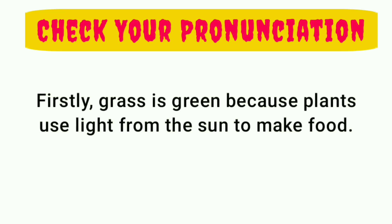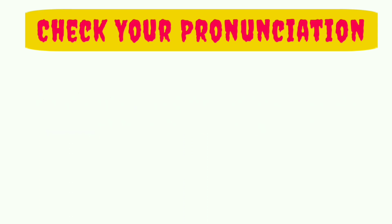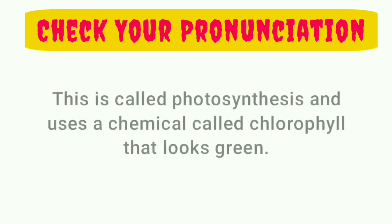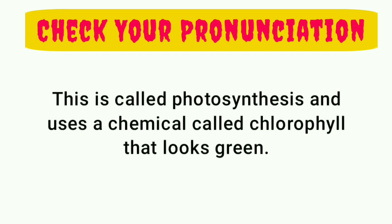Firstly, grass is green because plants use light from the sun to make food.